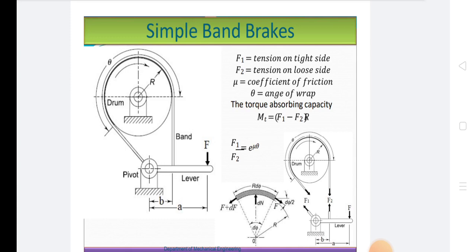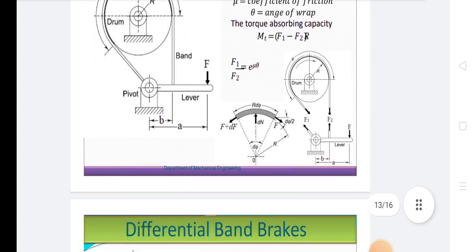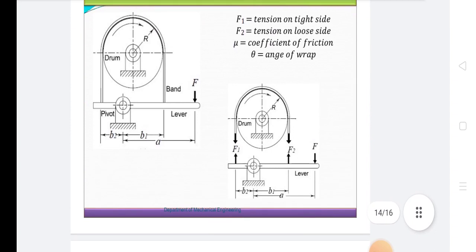The frictional resistance between the band and the drum will introduce a braking torque on the drum. There are two types of band brakes: simple band brake and differential band brake. Simple band brakes and differential band brakes are shown in figure.